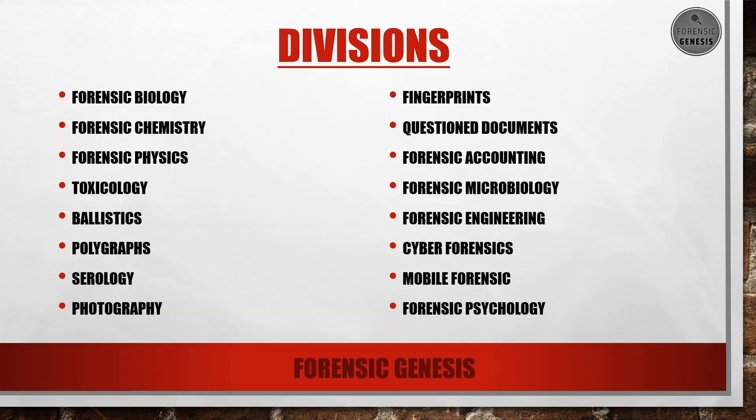Forensic biology deals with biological evidences like bones, hairs, nails, and skin sheds. Various information can be derived from these kinds of evidences. Forensic chemistry deals with adulteration of food substances, petroleum products, and construction materials. The physics division analyzes evidences like tool marks, soil, glass, paint, and voice analysis.